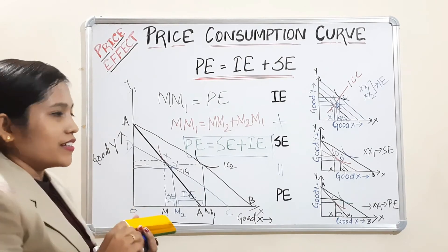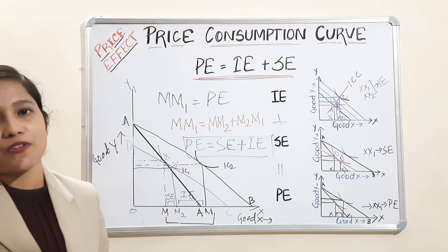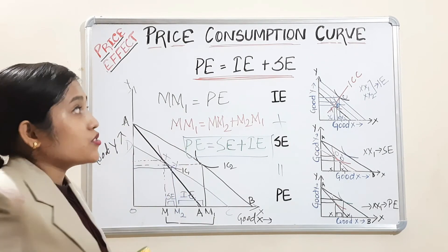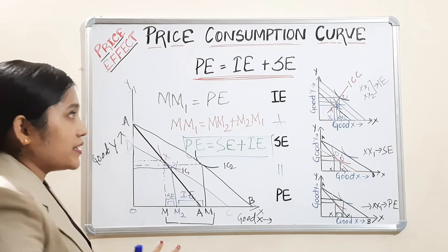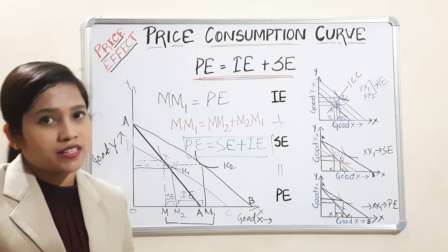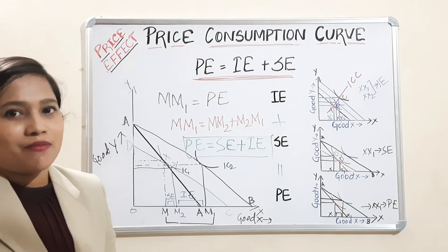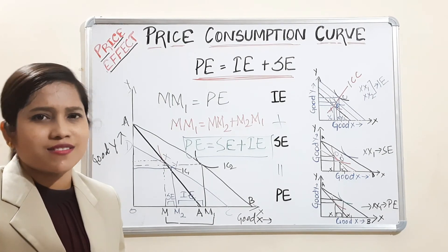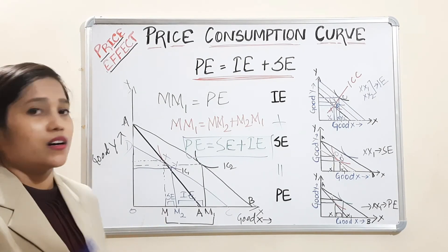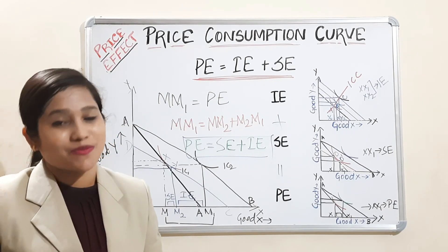If you have any doubts, please mention them in the comment box — you are free to ask anything about this topic. With this, all explanations of price effect, income effect, and substitution effect are complete, including all graphical methods. I'll provide notes in PDF form in the description box. In the next lecture, I'll cover MCQs and important questions on demand, income consumption curve, price consumption curve, and substitution effect. Thank you so much — don't forget to like and subscribe. Bye!